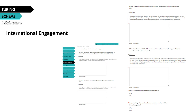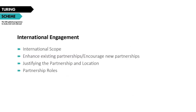Moving on to the next section: International Engagement. This contains four questions, each with a 500-word limit. The overall aim of this section is to demonstrate the potential of your project in reaching new partners or enhancing existing partnerships. There are no priority countries under Turing, so this isn't factored into the scoring — it's really for you to show why you've selected the countries you have and how these choices fit with your strategies and the Turing Scheme's Global Britain objective.